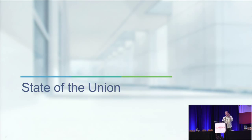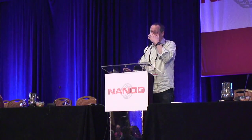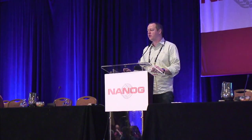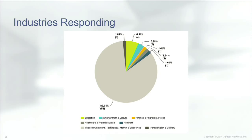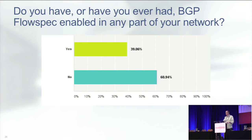That's kind of BGP flow spec and where we're at. The second half of this deck covers a survey I sent out to the NANOG mailing list asking about people's thoughts on BGP flow spec and whether they've adopted it. Not surprisingly, since this is NANOG, the majority of respondents are in technology, telecom, or internet industries, with a few from education, entertainment, and finance. The first question was: do you have or have you ever enabled BGP flow spec in any part of your network? The majority — almost 61% — haven't tried it. That really comes back to why I wanted to come talk about this today: I just want to raise awareness about it.